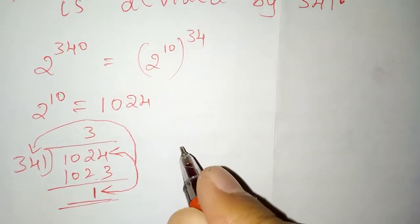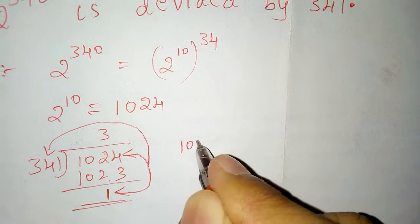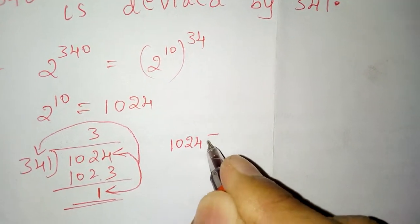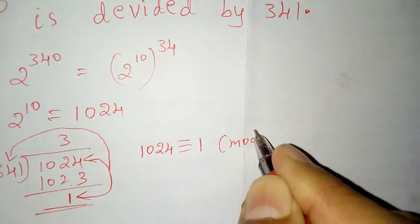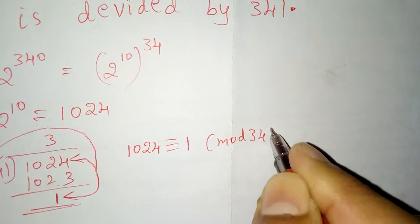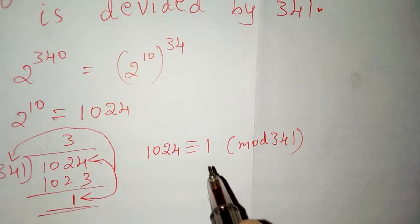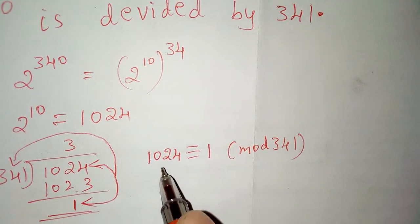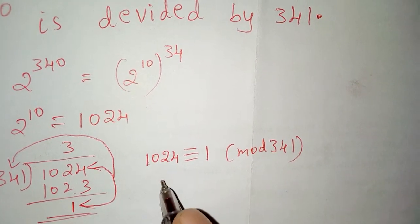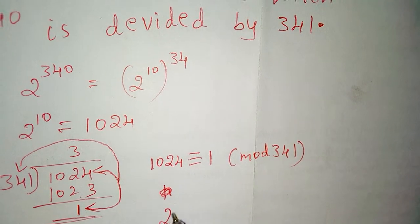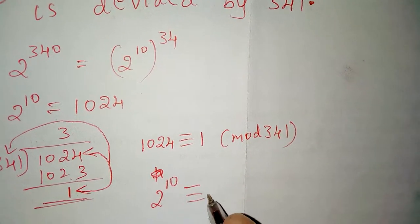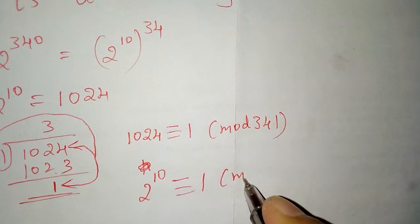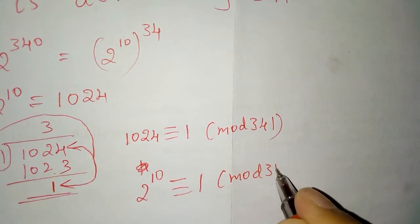That is, 1024 and 1 are congruent to mod 341. Here 1024 is 2 raised to 10 what we have taken, so 2 raised to 10 and 1 are congruent to mod 341.